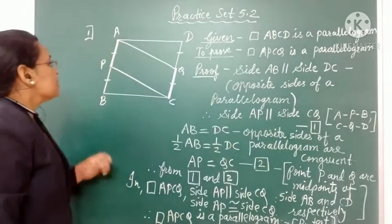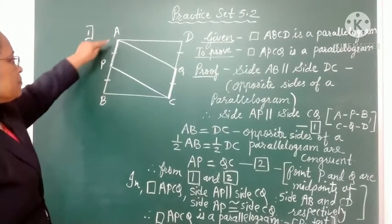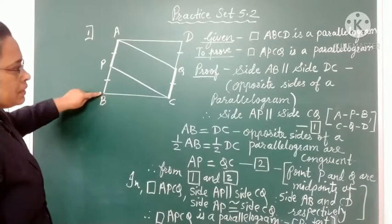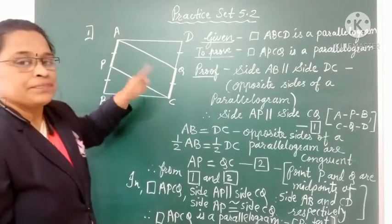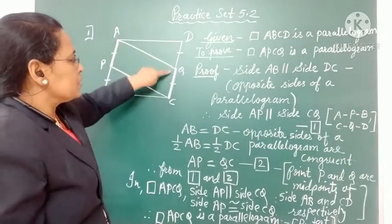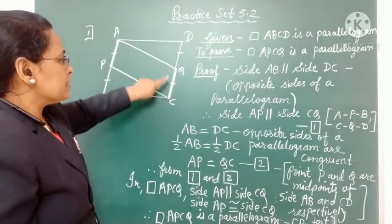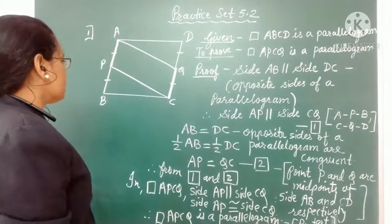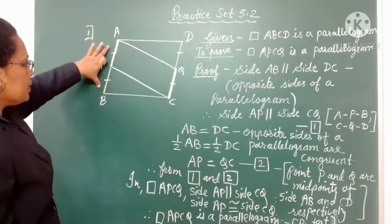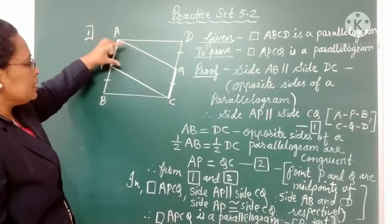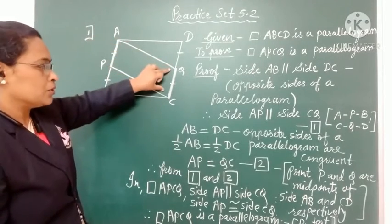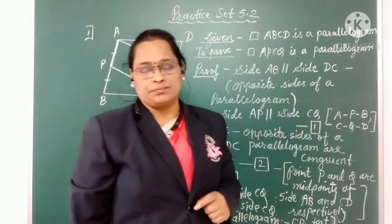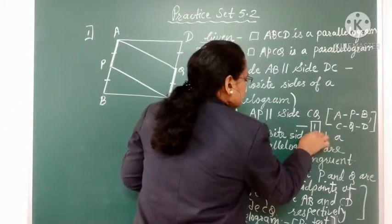The reason is that A, P, B are collinear points — point P is between points A and B. Similarly, D, Q, C are collinear — point Q is between D and C, as Q is the midpoint of DC. So we can say: if AB is parallel to DC, then AP is also parallel to QC. We write side AP parallel to side QC as statement 1.